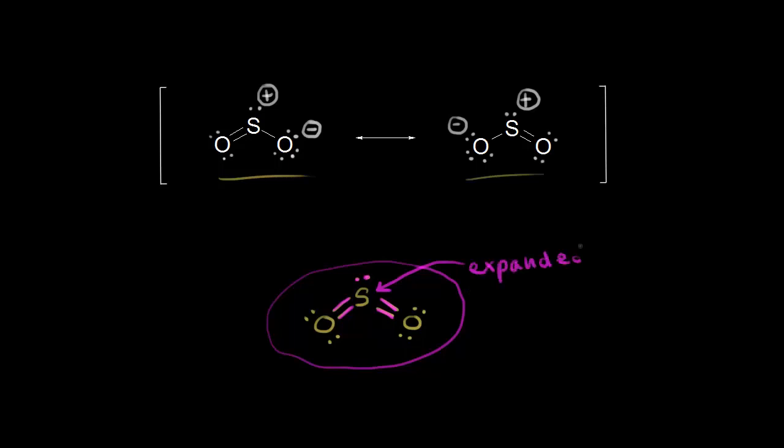This is expanded. We have more than eight electrons around it. And that's okay to do because of sulfur's position on the periodic table. Sulfur's in the third period, so we have some d orbitals. So we can have more than eight electrons around sulfur. So this should be a valid dot structure.